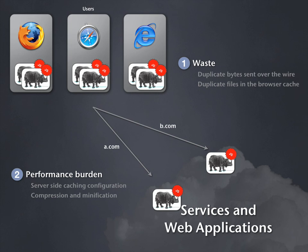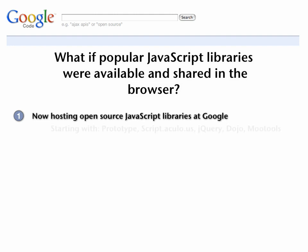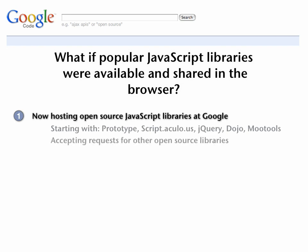So we've got various issues with the way we're kind of doing things right now. We thought, what if we took popular JavaScript libraries and made them available in a way that could be shared in the browser? So that's what we're doing. We're going to be hosting these open-source JavaScript libraries at Google, and we're going to start with Prototype, Scriptaculous, jQuery, Dojo, MooTools — popular libraries that we know are out there. But this is just the beginning. We don't want this to be a way where we choose a certain subset; we just want to get going and then accept requests for other open-source libraries that we can also bring into this system.